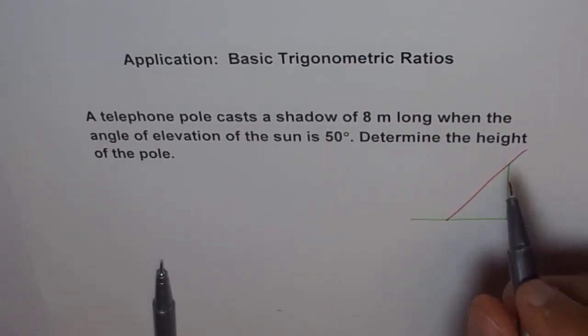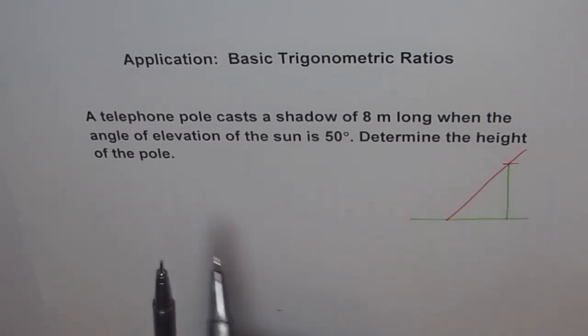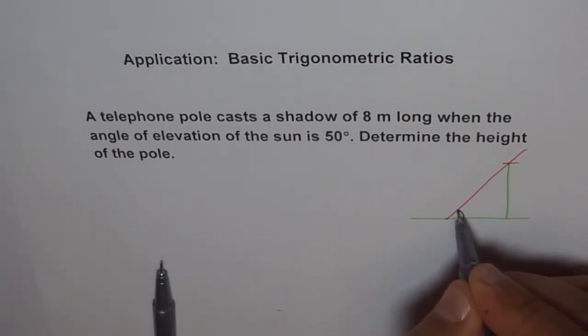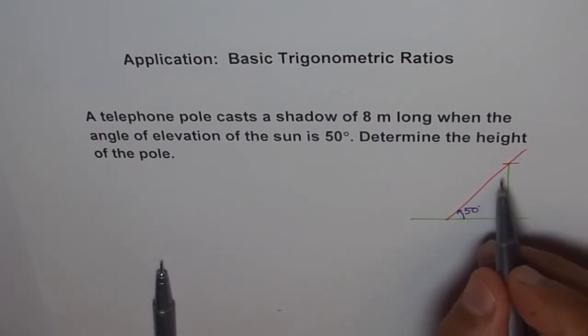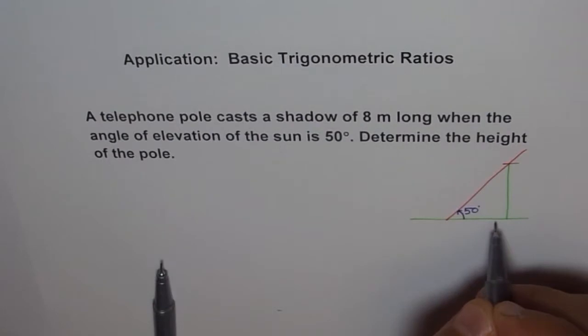The height of the pole is up to here. Angle of elevation is 50 degrees. That means this angle from the horizontal is 50 degrees. Always, angle of elevation is looking upwards from the horizontal.